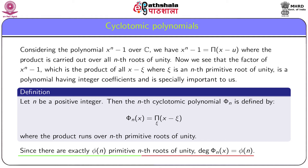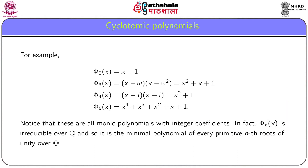Let n be a positive integer. The nth cyclotomic polynomial, denoted φ_n(x), is defined by φ_n(x) = ∏(x − ξ) where ξ runs over all primitive nth roots of unity. Since there are exactly φ(n) primitive nth roots of unity (where φ is the Euler phi function), the degree of the nth cyclotomic polynomial φ_n(x) equals φ(n). For example, the second cyclotomic polynomial is x + 1, since −1 is the only primitive second root of unity.